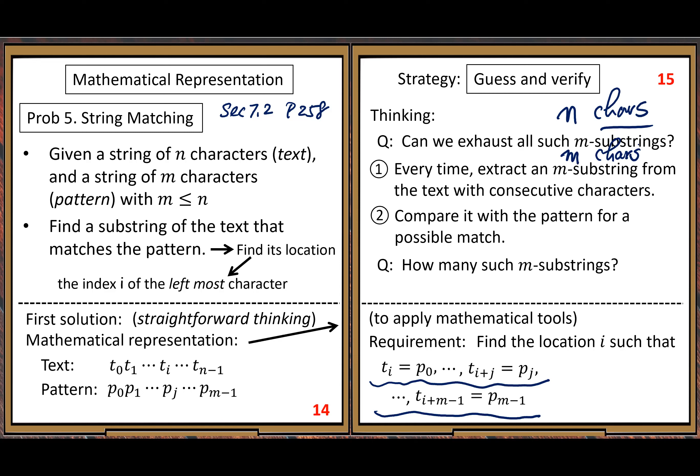Using these two numbers, n and m: you move one character to the right every time, starting from index zero, then after each string comparison you move one position to the right until you reach the last m-substring. Now give me your guess — here we apply guess and verify. Try to get the number as close to the answer as possible. Using n and m, what's your guess? N minus m — that's the first natural guess.